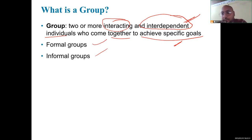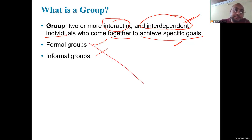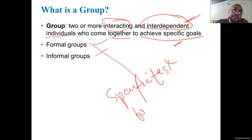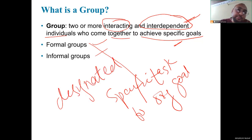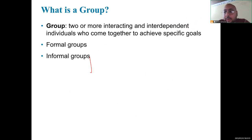There are two types of groups: formal groups and informal groups. Formal groups are work groups defined by organizational structure — they have designated work assignments and specific tasks. Everything would be according to the structure, according to the designation. Informal groups, on the other hand, occur naturally at the workplace and they tend to form a friendly environment.